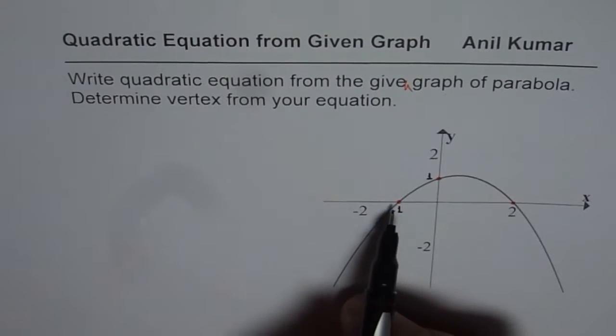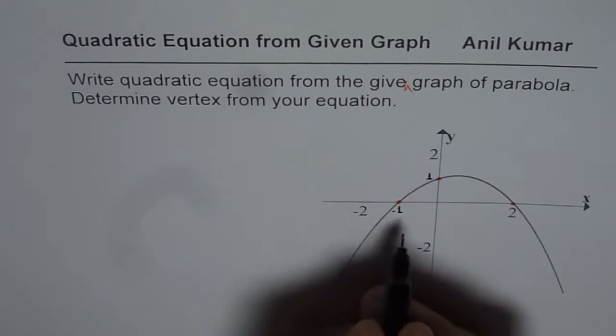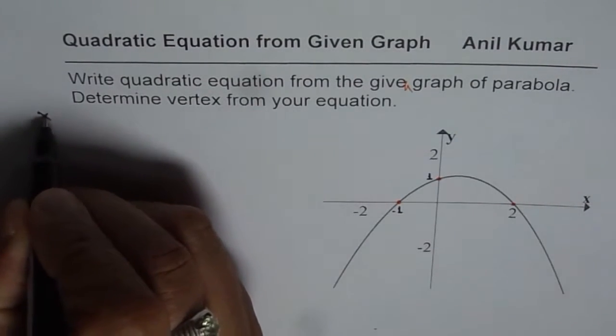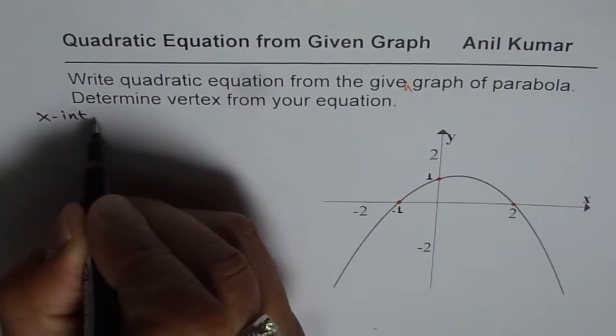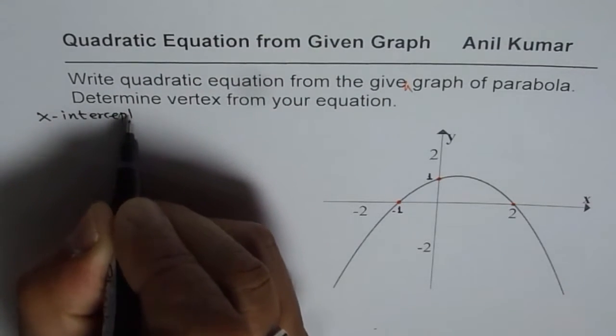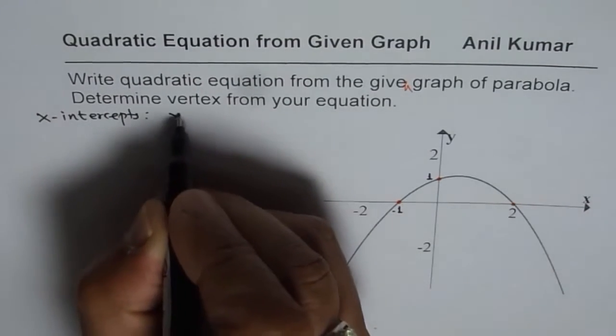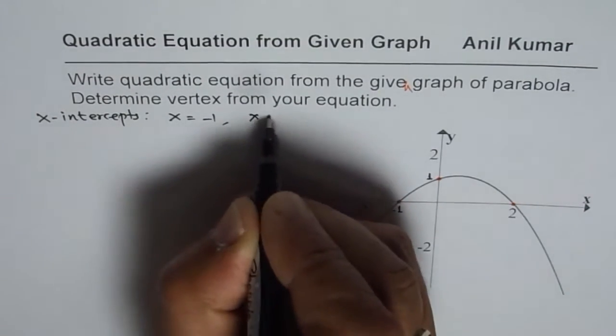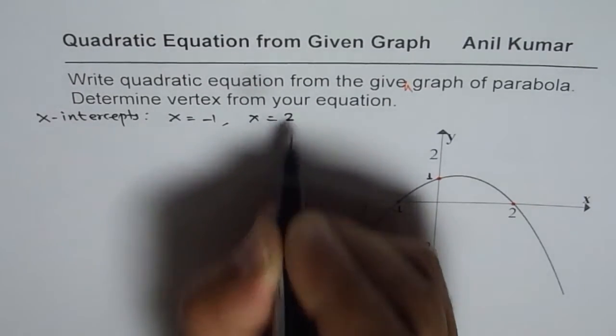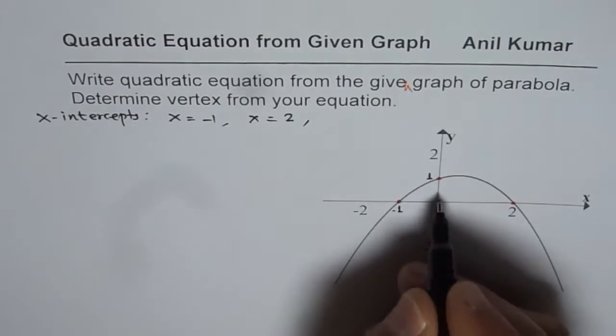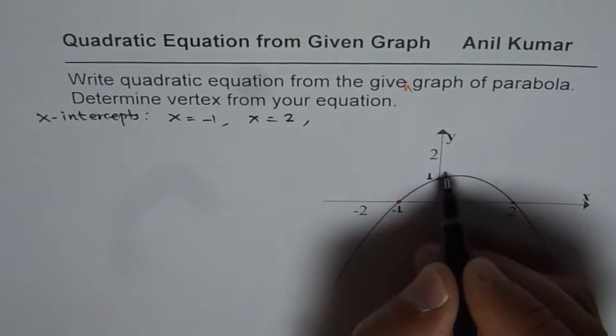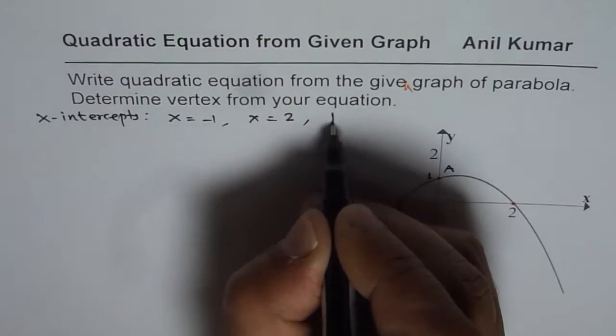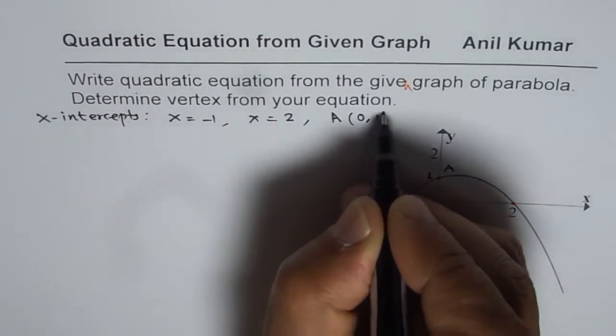So what we are given here are two x-intercepts. The first one is at x equals minus one. The other one is at x equals two. And we are also given y-intercept. Let me call this as point A. So point A is given to us as zero, one.